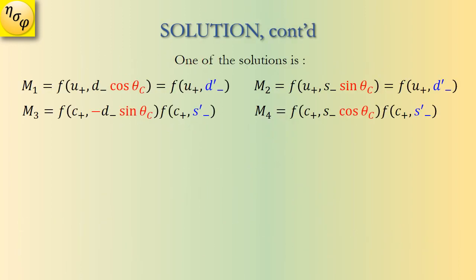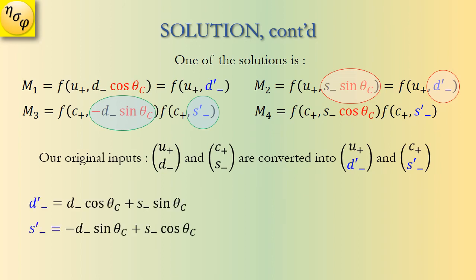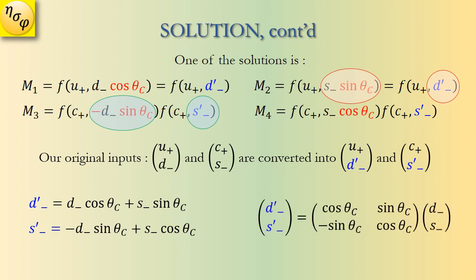One solution is to absorb the cosine and sine factors into one of the inputs and rename the new input as a variable with a prime — for example, d becomes d-prime. Note carefully: sine(theta-c) is absorbed into d-prime-minus, and d·sine(theta-c) is converted into s-prime-minus. Thus we have converted our original inputs into a new set of inputs, and the rotation is now recognizable.